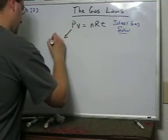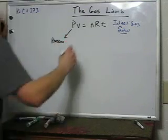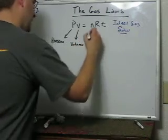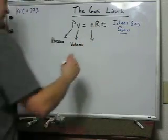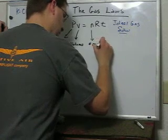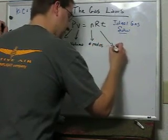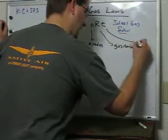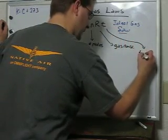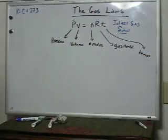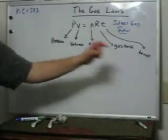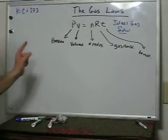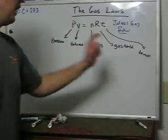The ideal gas law states that pressure times volume equals the number of moles times the gas constant times the temperature of the gas. All of these variables are related, and it's how we look at the relationships between number of moles, volume, pressure, and temperature that define all of the other gas laws.